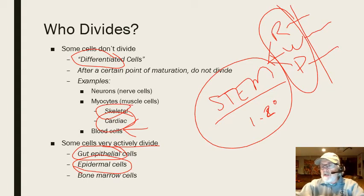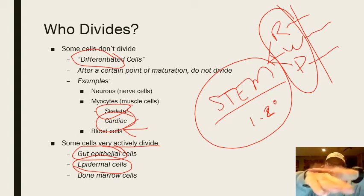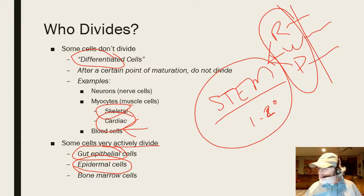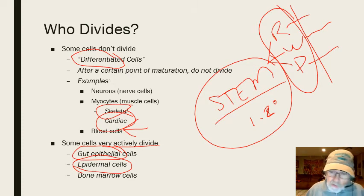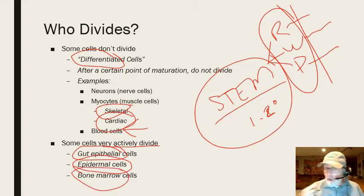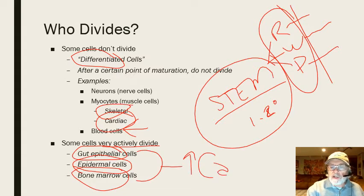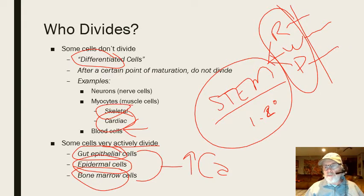Epidermal cells are constantly shedding from the outside, and the basement layer of the epidermis is dividing to replace what's lost daily. We're constantly shedding cells everywhere we go. Cells that divide very actively have an increased risk of developing cancers, because there's a greater chance of some type of abnormal cell division occurring.